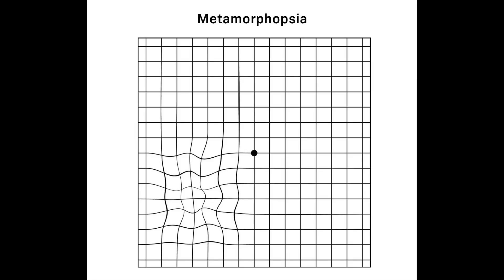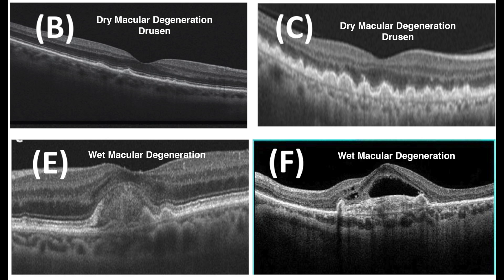The symptoms someone might start to get when they have wet macular degeneration include something called metamorphopsia, which is basically distortion or waviness of your vision. If you're looking at something with a straight line, instead of that line being straight, it might look curved, wavy, or distorted. That's because there's a bulge underneath the retina from the buildup of fluid, which distorts how the image sits on the retina and causes you to see a wavy line.